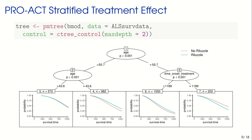Looking at the individual subgroups: in the first subgroup with the youngest patients, we see basically no treatment effect — if anything, taking Riluzole may be worse than not taking it for this subgroup. In the second and third subgroups, we see a positive treatment effect of Riluzole. In the fourth subgroup, we again see rather a negative effect. What we would do with these results — since this is a data-driven process — is generate hypotheses, for example that young patients should not take Riluzole, and then plan a new trial to evaluate that question.